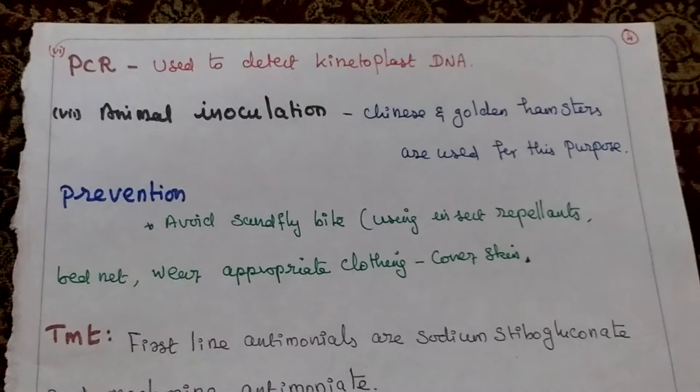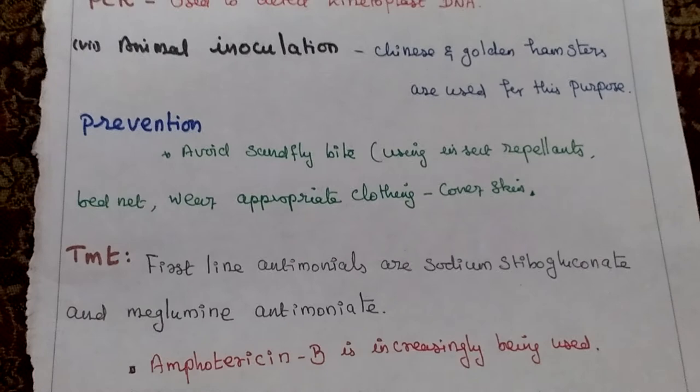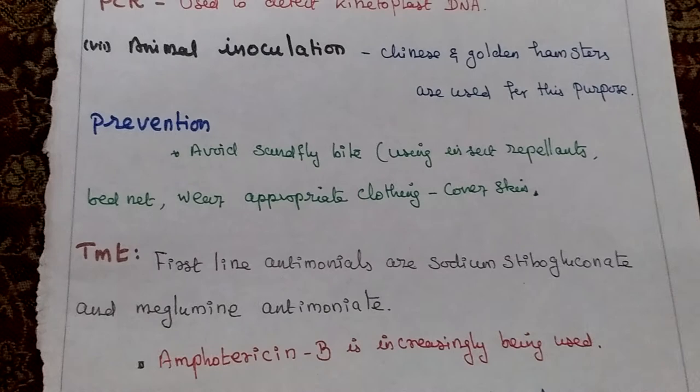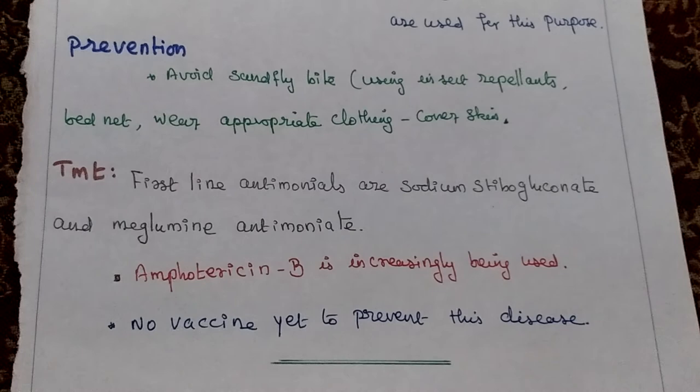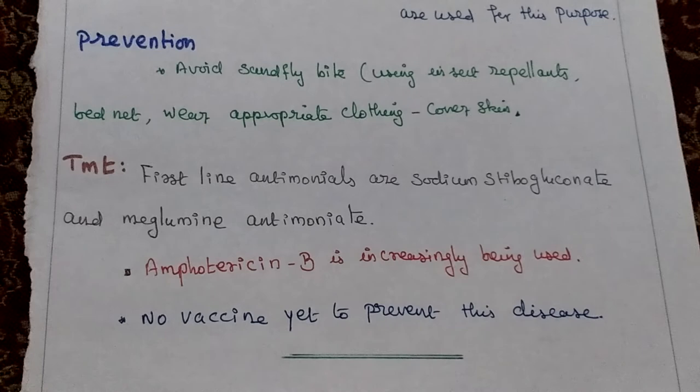For prevention: avoid sandfly bites by using insect repellent, bed nets, wearing appropriate clothing, and covering the skin. For treatment, first-line drugs are antimonials — sodium stibogluconate and meglumine antimonate. Amphotericin B is increasingly being used. Still, there is no vaccine for this disease.